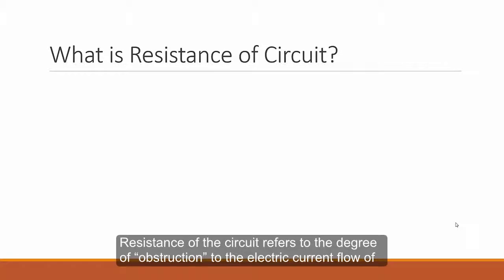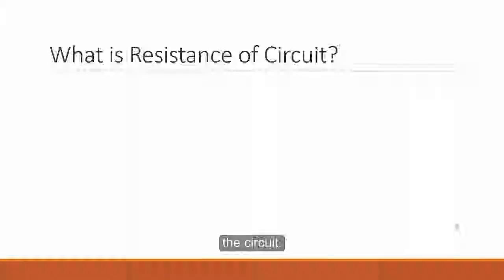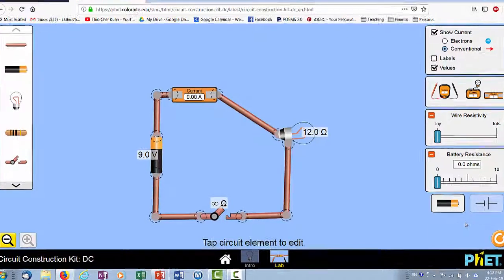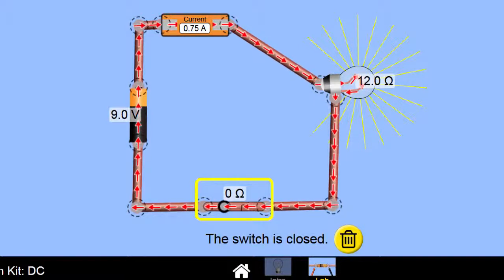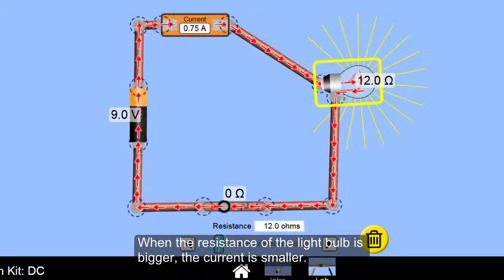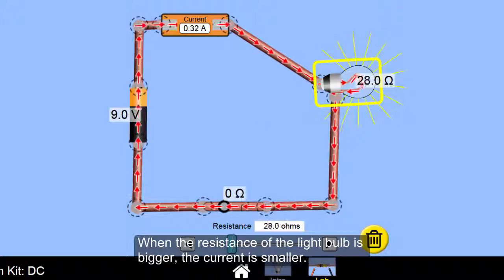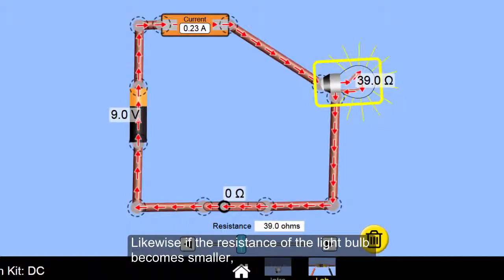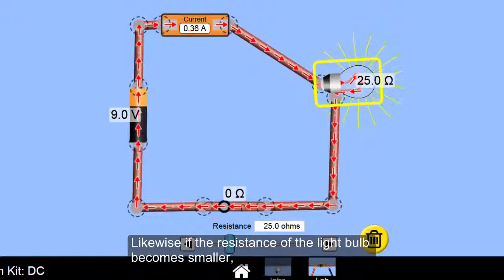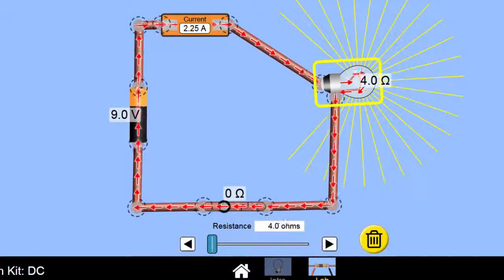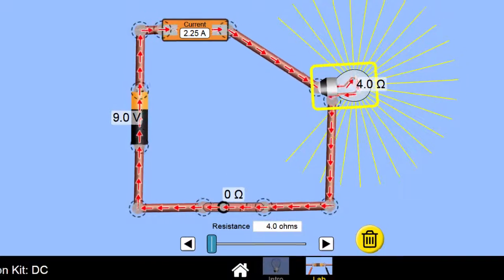The resistance of a circuit refers to the degree of obstruction to the electrical flow of the circuit. Assuming that the emf of the battery or the power source does not change, when we close the switch, there's a certain current flow. When the resistance of a light bulb is bigger, the current becomes smaller, as you can see from the flow. Likewise, when the resistance of a light bulb becomes smaller, the current becomes bigger, as you can see from the flow that is faster now.